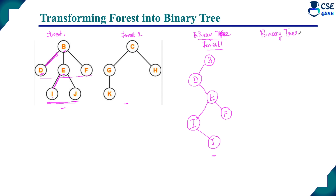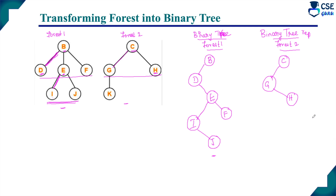Next is the binary tree representation of forest 2. Same procedure: root node stays as root, first left child stays as left child, and H is the sibling — connect it towards the right. For node G as root, K is its only child, so connect K as the left child of G. This is the binary tree representation of forest 2.